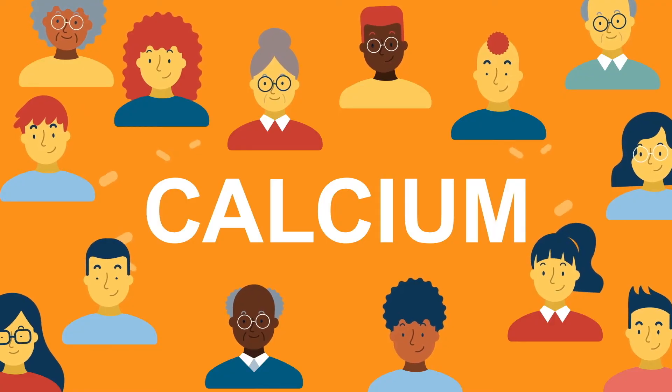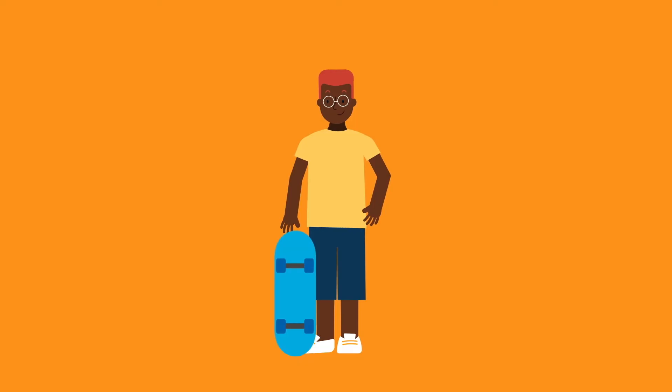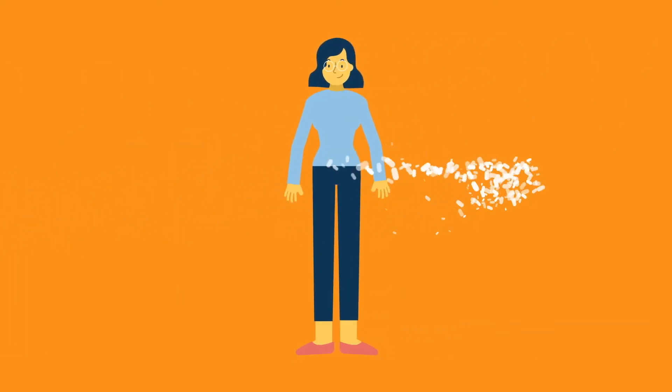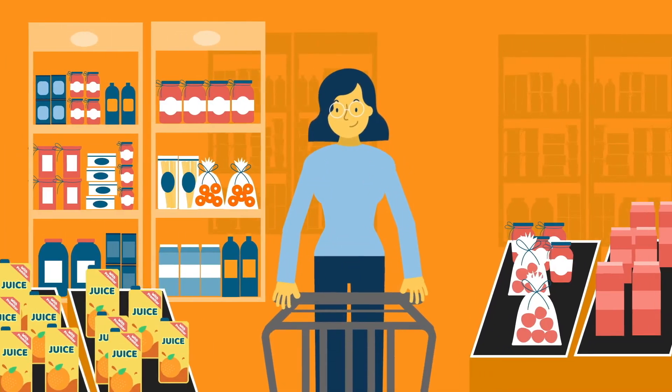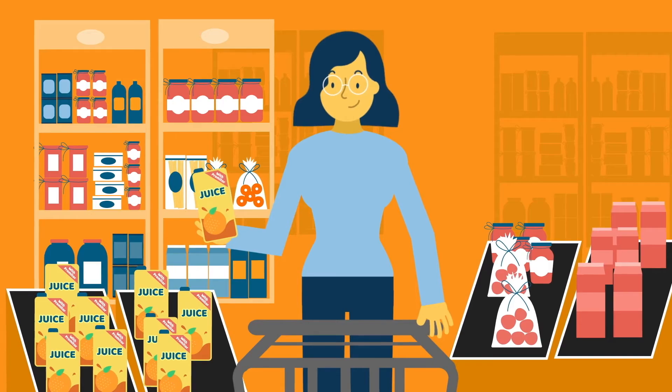Calcium is important throughout the lifespan. For teenagers, it is necessary for growth and development. And in adulthood, to help maintain bone health. Tate & Lyle Promitor Soluble Fibre helps to increase calcium absorption and bone calcium retention.